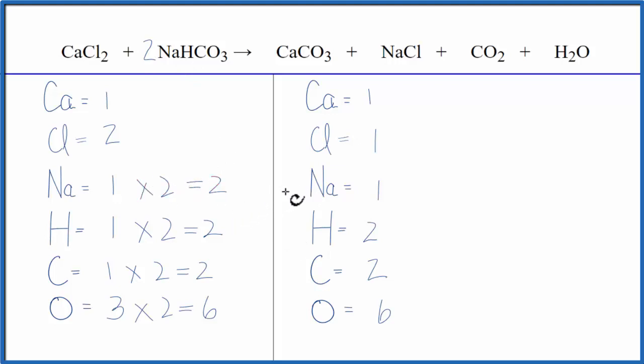At this point, we have two sodiums here and one here, two chlorines here and one here. So all I really need to do is put a two as the coefficient in front of NaCl. Now I have one sodium times two, that'll give me two. One chlorine times the two, that gives me two.